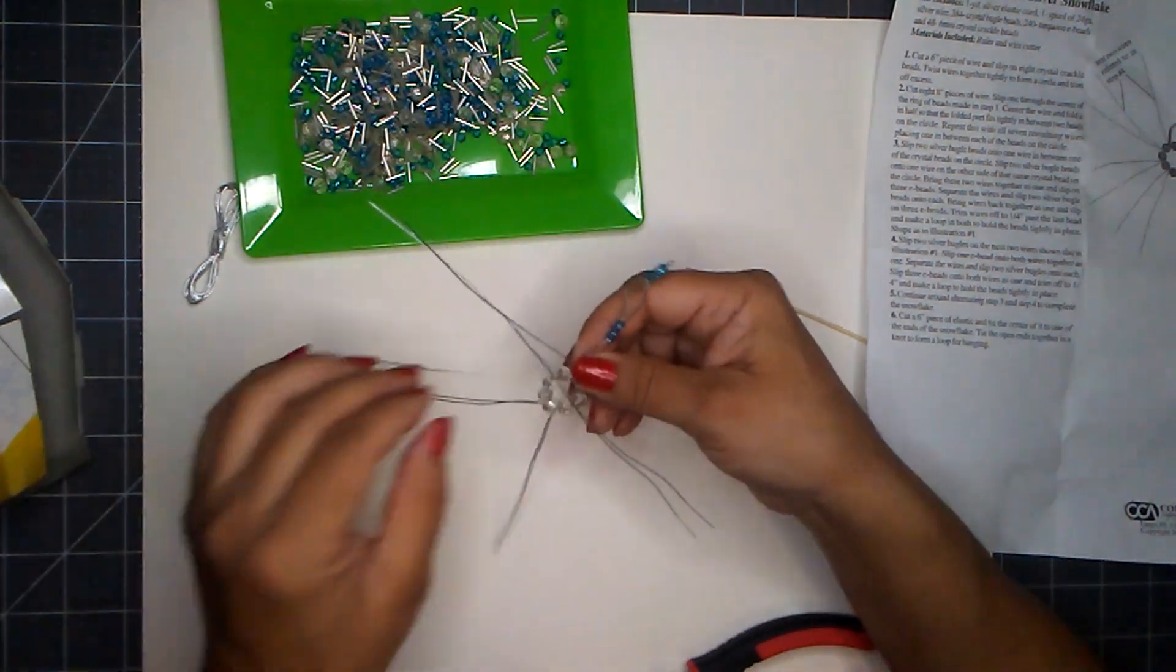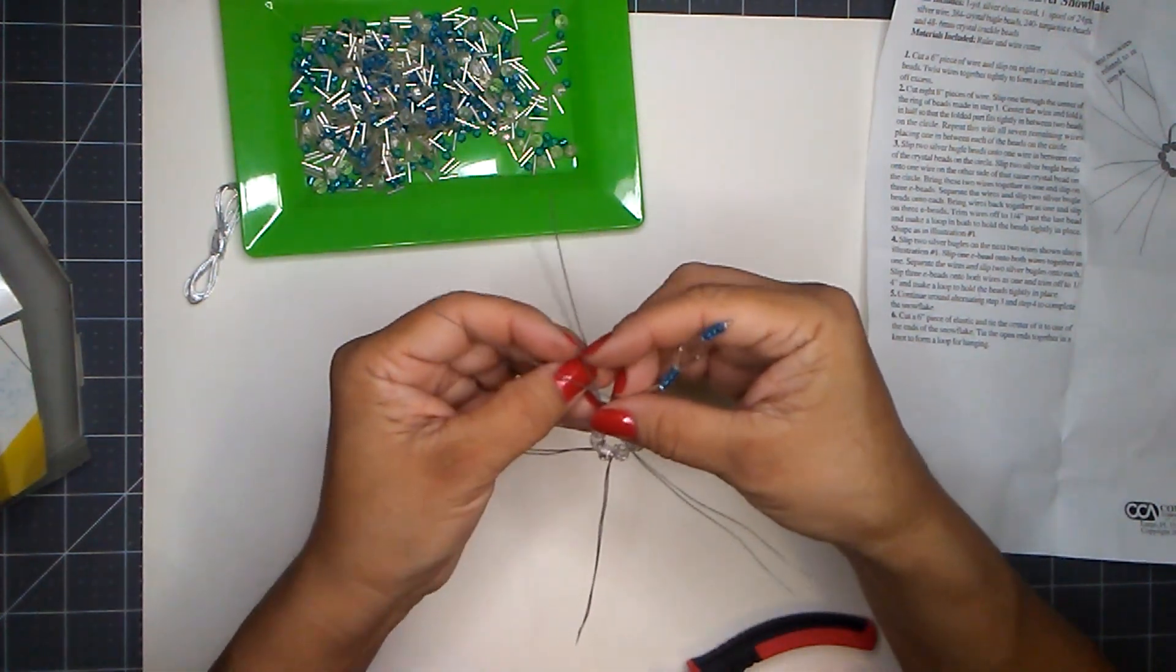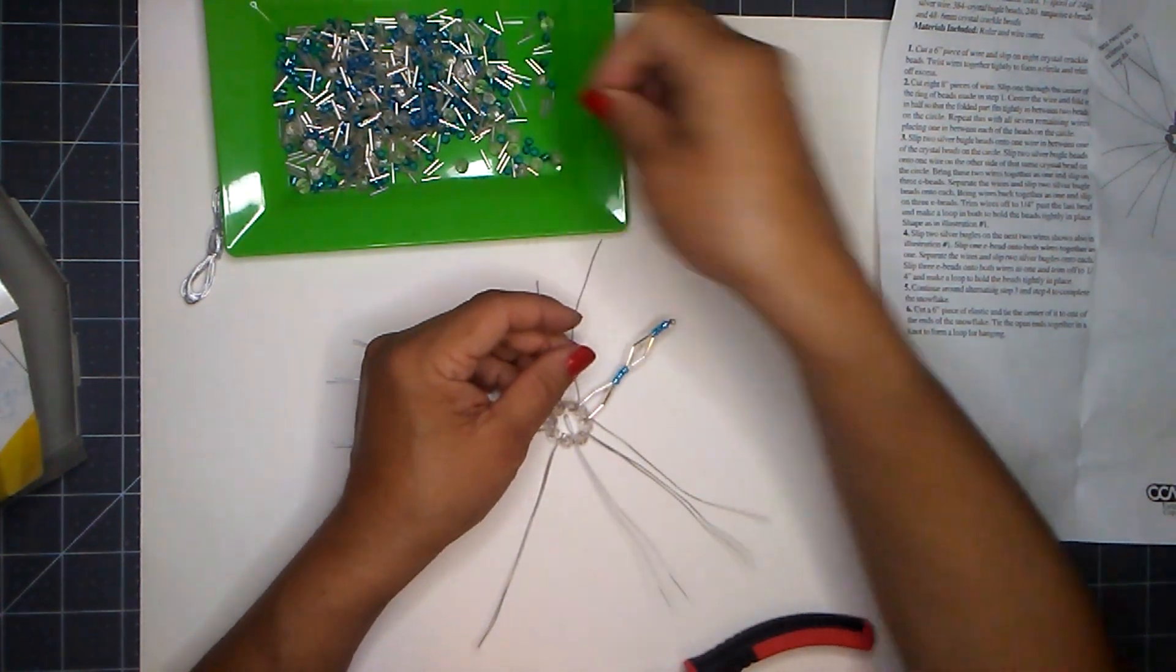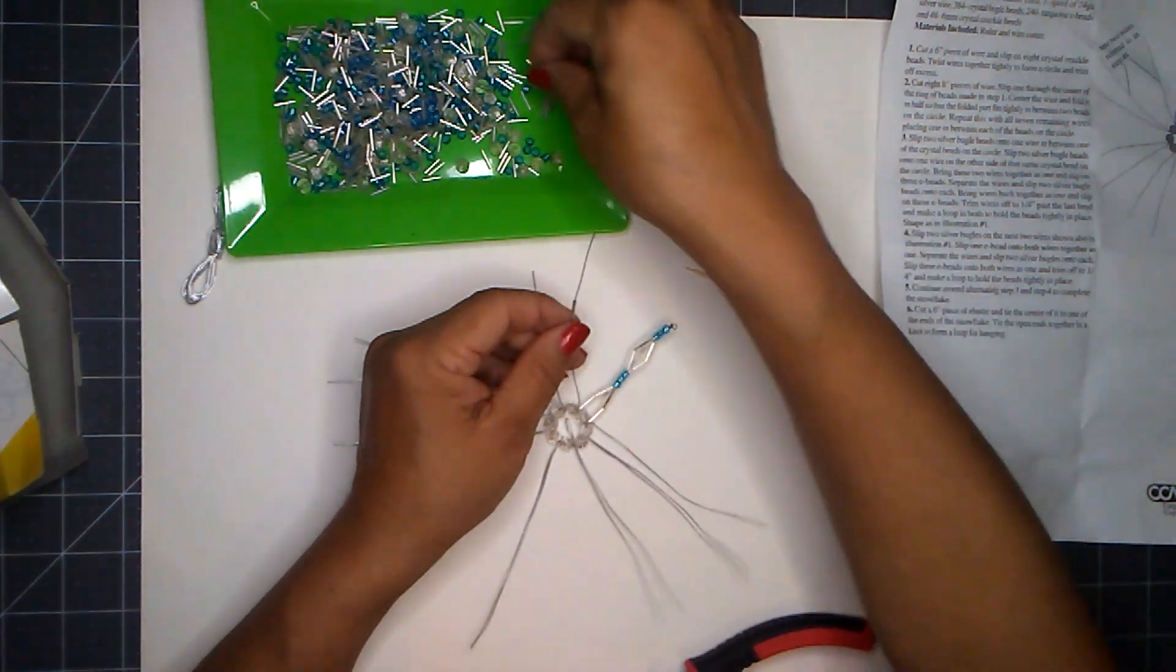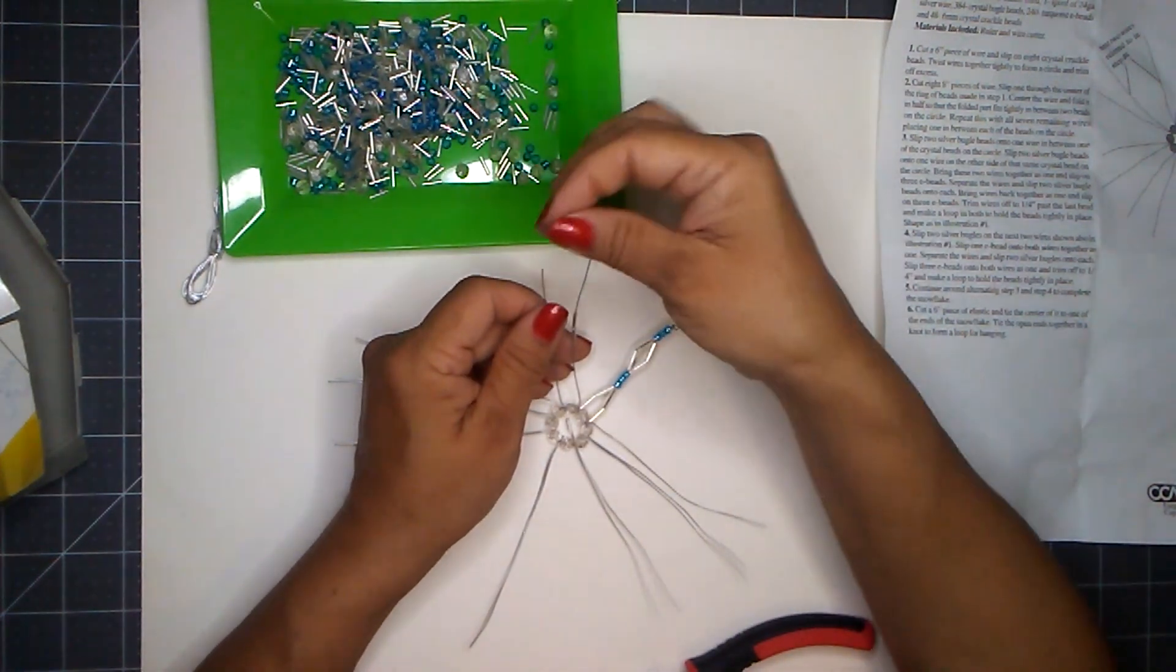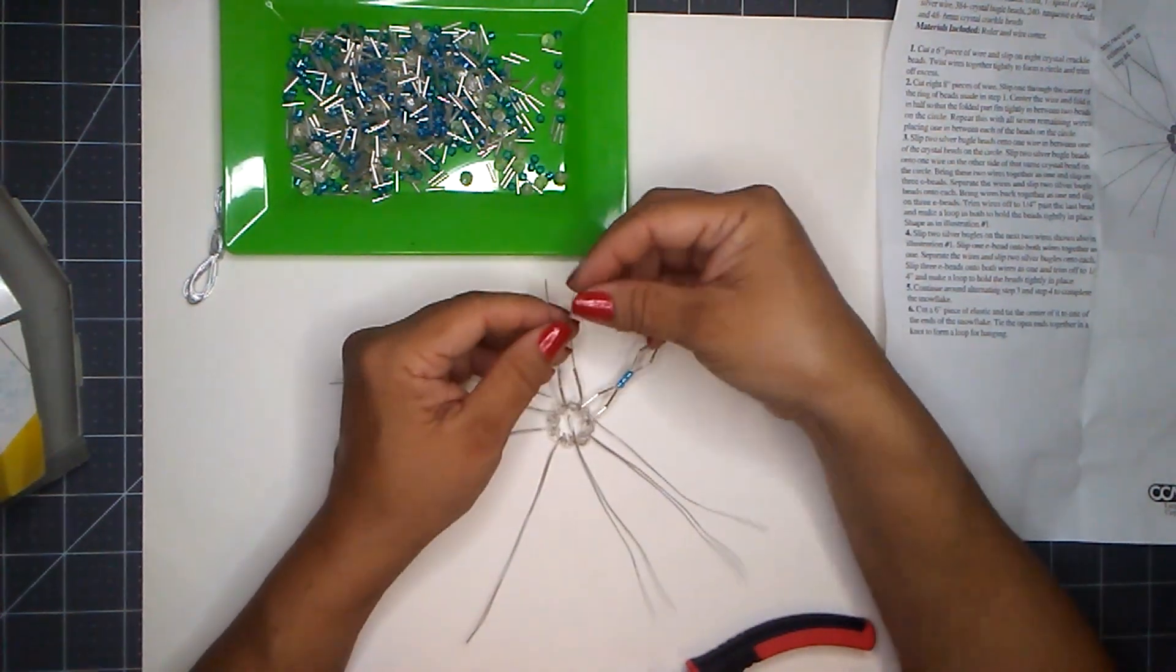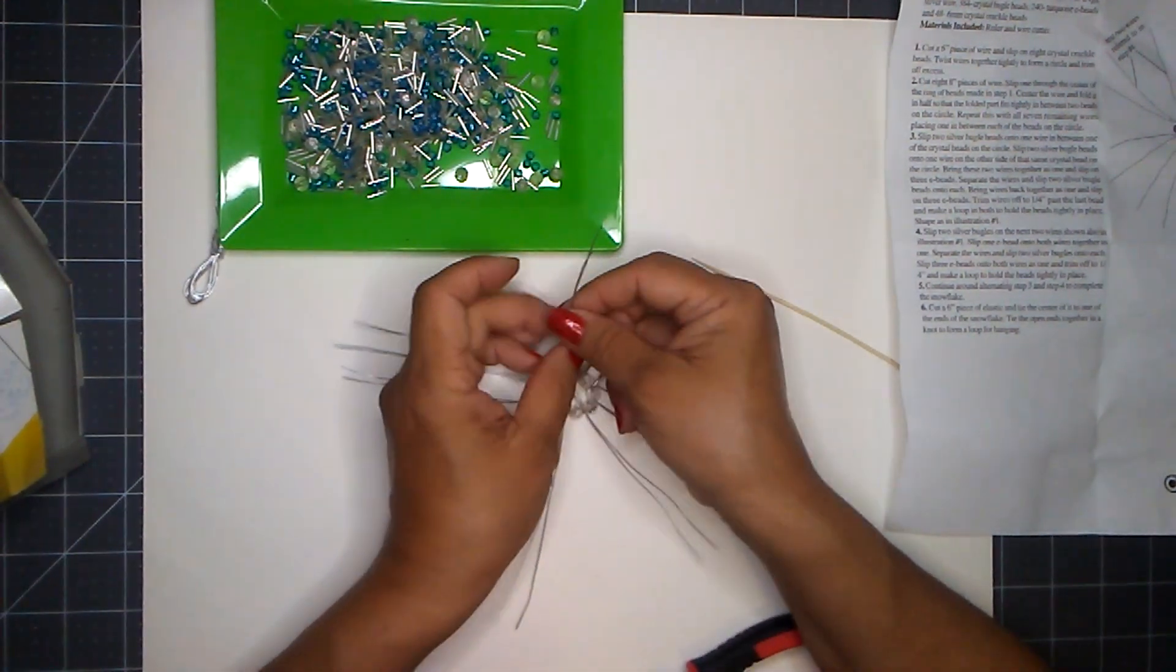And then you go to the next set of wires, one on each side of the bead. And we do the same thing again. Grab two more bugle beads. There you go. On each side of my wire, see I have bugle beads on each side. Now we're gonna put those together.